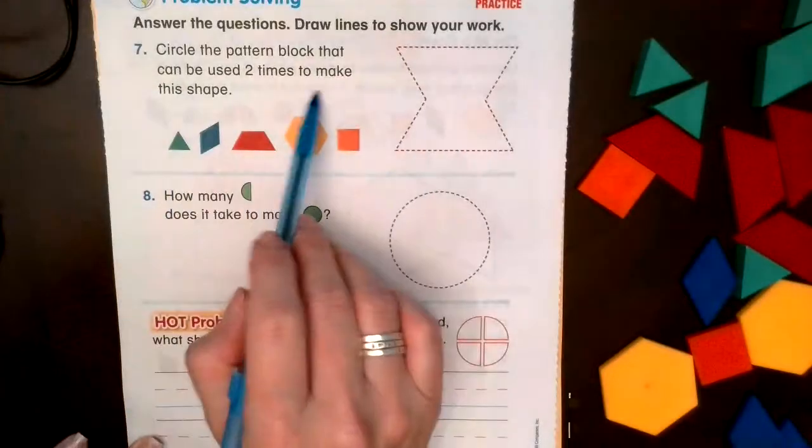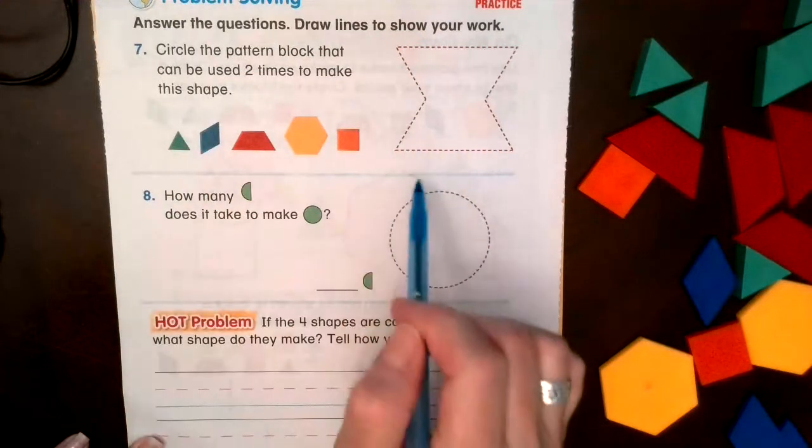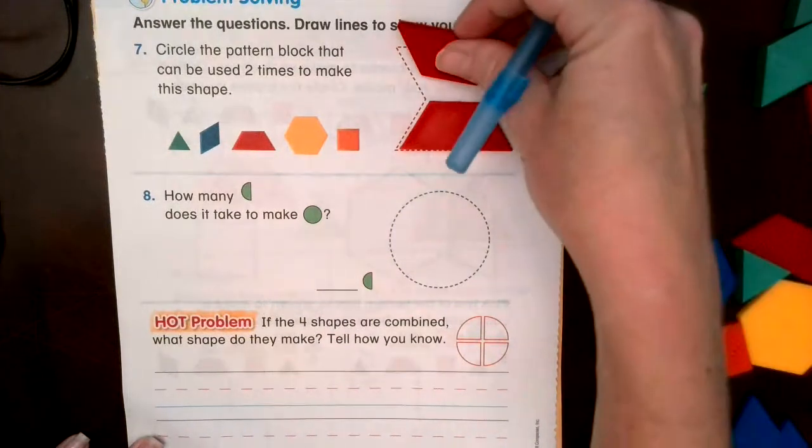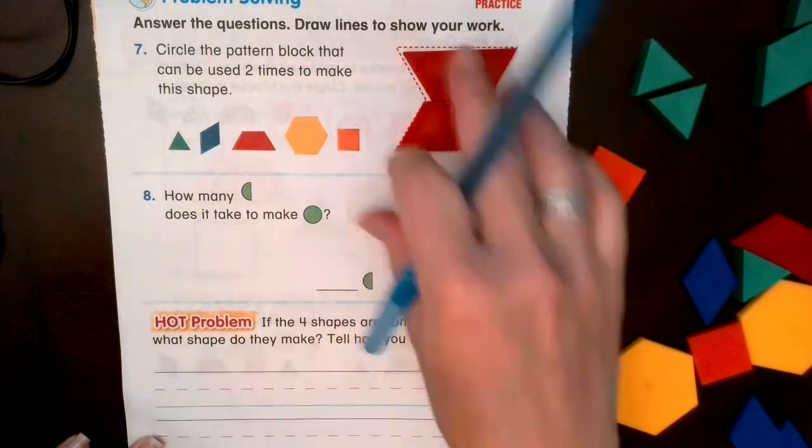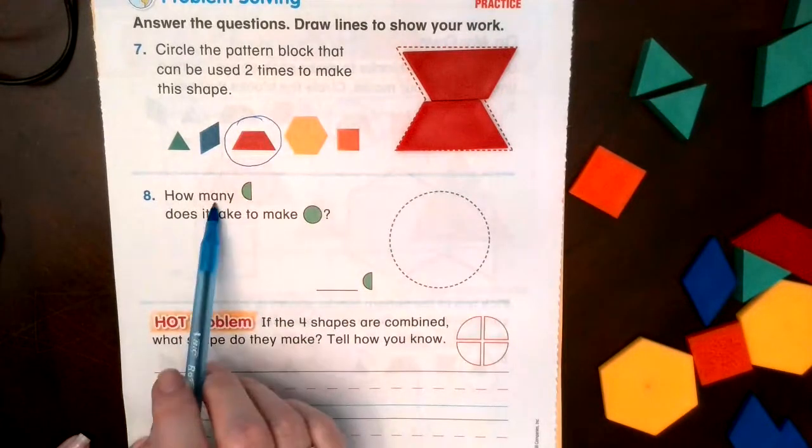On the back side, let's circle the pattern blocks that can be used two times to make this shape. What shape? Yes, look at this. This can go here and another one can go on top. Awesome, so we're gonna circle this one.